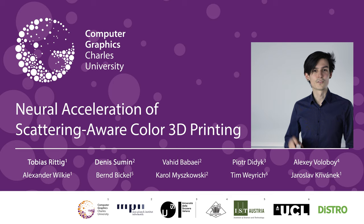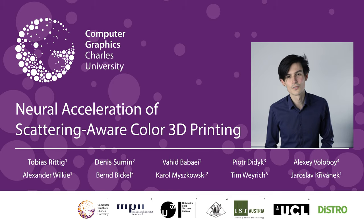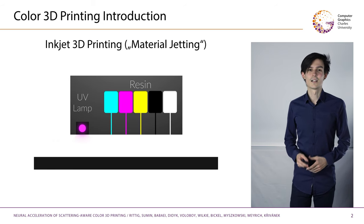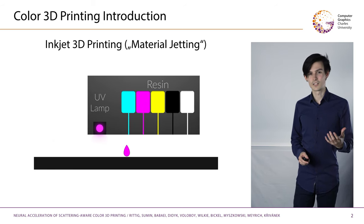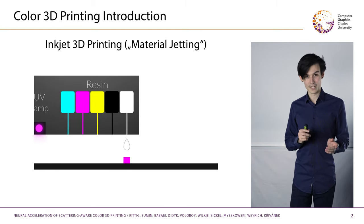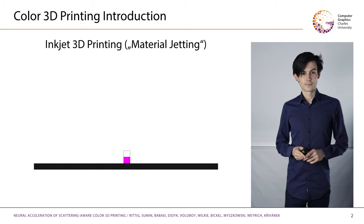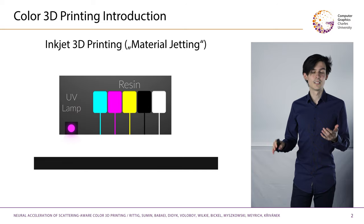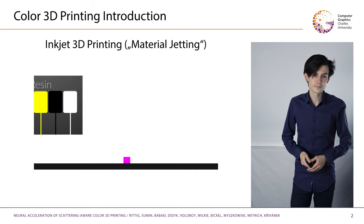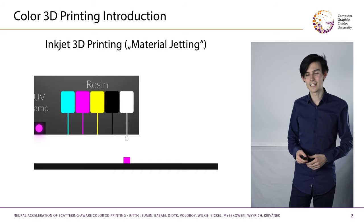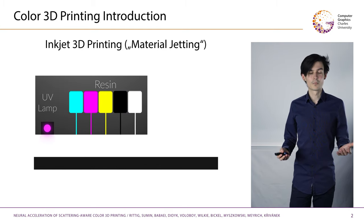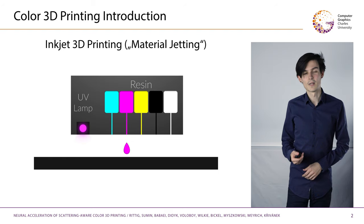Our title consists of two parts, and I will first introduce you to the second part: what is scattering-aware color 3D printing? The most detailed color 3D printers use inkjet 3D printing or material jetting to deposit tiny droplets of liquid photo-activated polymer on top of each other. The droplets are immediately hardened by UV light so that the next layer can be printed on top. These machines produce great fidelity and are used in multiple industries where appearance matters, such as prototyping, visual effects, or medical prosthetics.